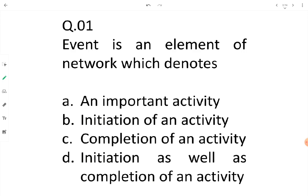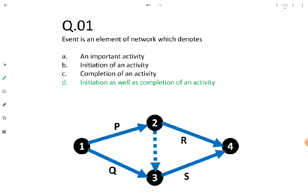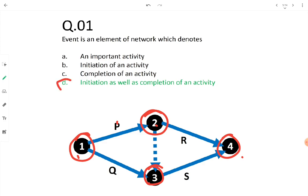An event neither requires any resource nor any time period. In the given diagram, events are 1, 2, 3, and 4. Events do not require resources or time, but activities do. Activities require resources, materials, and time for their completion and progression. In this network diagram, events are 1, 2, 3, and 4, and P, Q, R, S are the four activities. That's why option D is correct — it is initiation as well as completion of an activity.